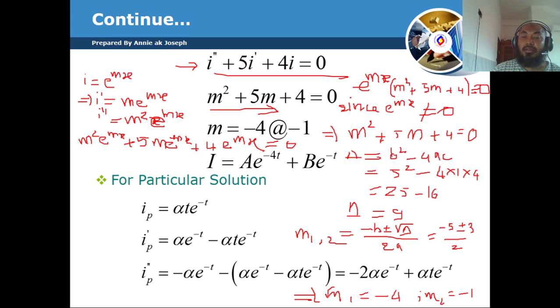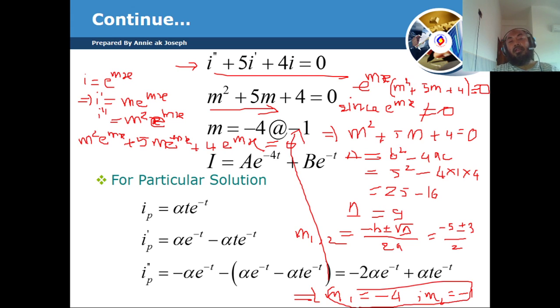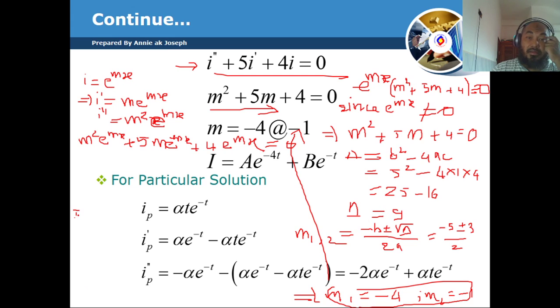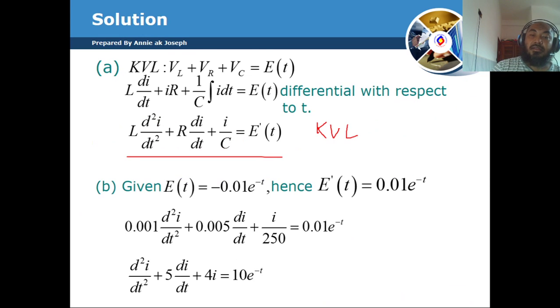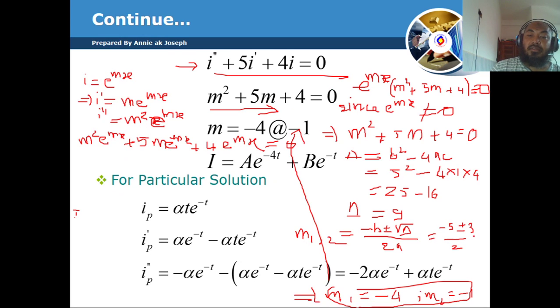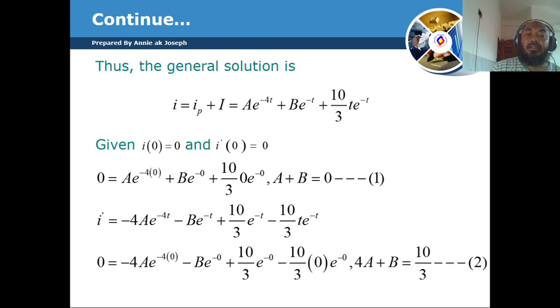With m₁ = -1 and m₂ = -4, we substitute back into the circuit equation to obtain the general solution for i, and then find the particular solution, which is straightforward.